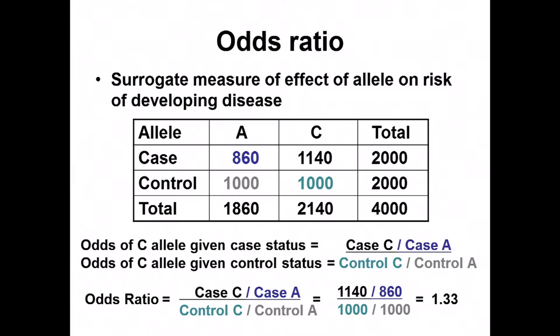For a case-control study, we can calculate the odds ratio. We analyze the number of cases and controls that carry each allele — say A and C — of a given genotype, and calculate the odds ratio to assess the amount of risk. A value of 1.33 represents increased risk of disease for this variant.